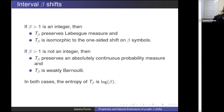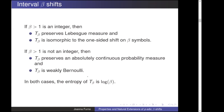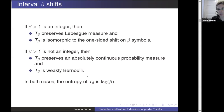Something isomorphic to these one-sided shifts is called a Bernoulli shift — it's the strongest idea you can have of your iterates being independent. Weakly Bernoulli is a weaker notion of independence: things in the distant future and distant past are approximately independent. It's not as strong as a full Bernoulli shift, but it's another independence idea.